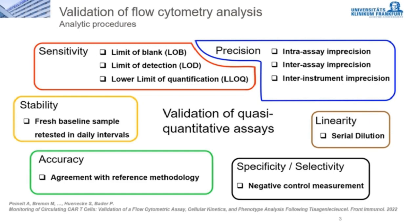Starting with the establishment of the monitoring method, as part of the validation of the quantitative assay, we examined the following aspects: sensitivity, where we calculated the limit of blank, limit of detection, and lower limit of quantification and showed linearity by serial dilution; precision, analyzed via intra- and inter-assay imprecision as well as imprecision analysis between instruments; stability, determined by repetitive measurements of the same samples on five consecutive days, which is important for clinical routine as patient samples frequently arrive with delay from external clinics; accuracy, shown in comparison with PCR; and specificity and selectivity, shown by measurement of negative controls who did not receive CAR T-cells.